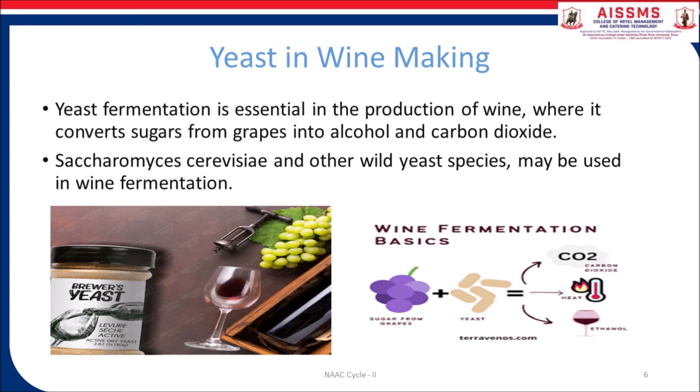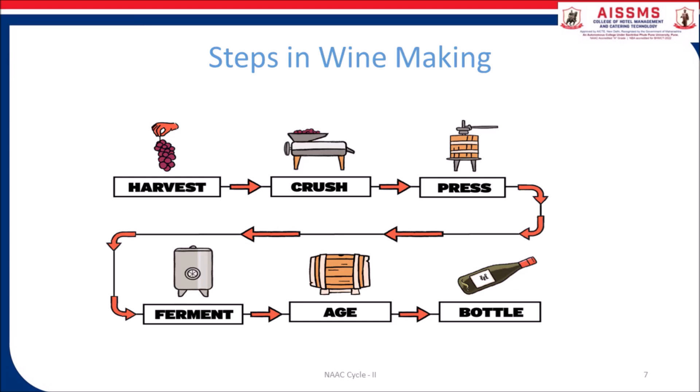Now let's understand the steps in wine making. Wine making is like a romantic journey. It begins with the harvest of ripe grapes from sun-kissed vineyards. As the grapes are crushed to release juice, skins and seeds, the grape juice or must is transferred to fermentation vessels where yeast is added to initiate fermentation. Yeast works its magic, turning that sweet grape juice into velvety wine that tells the story of its origin with every sip.